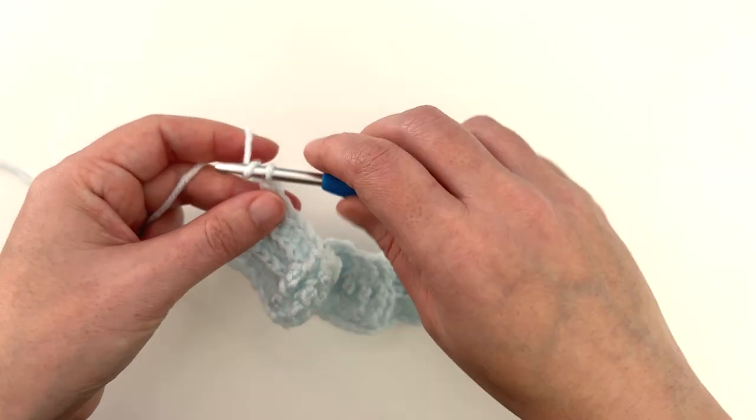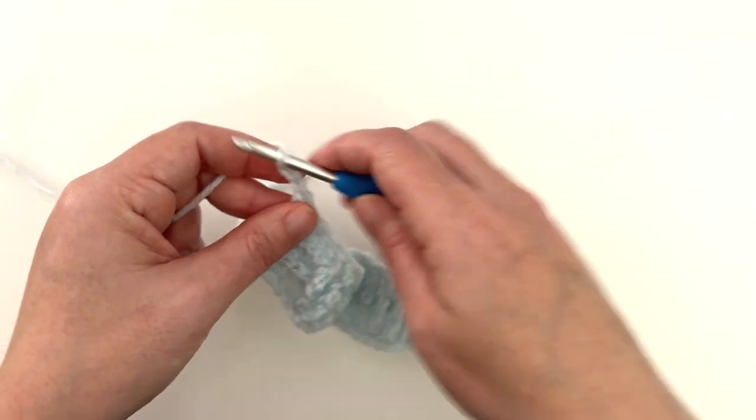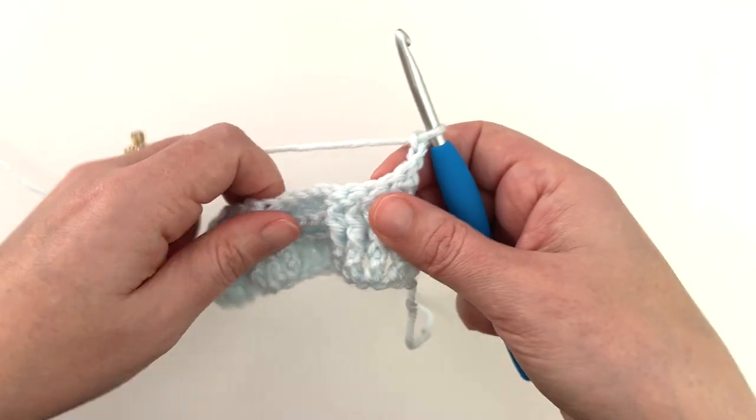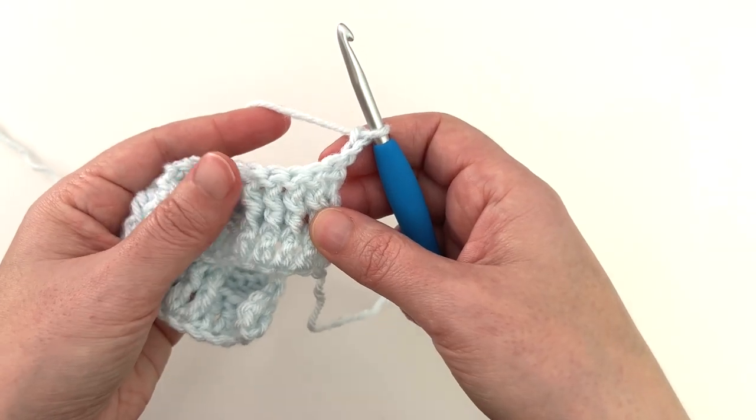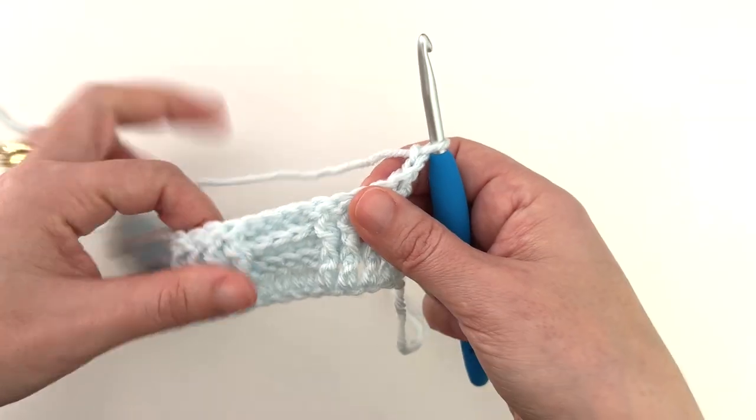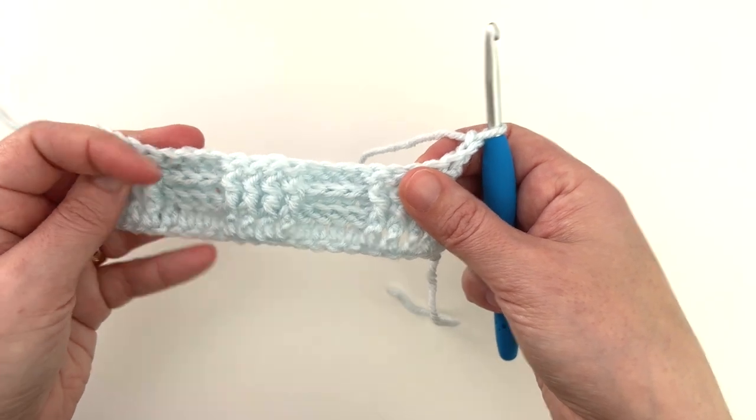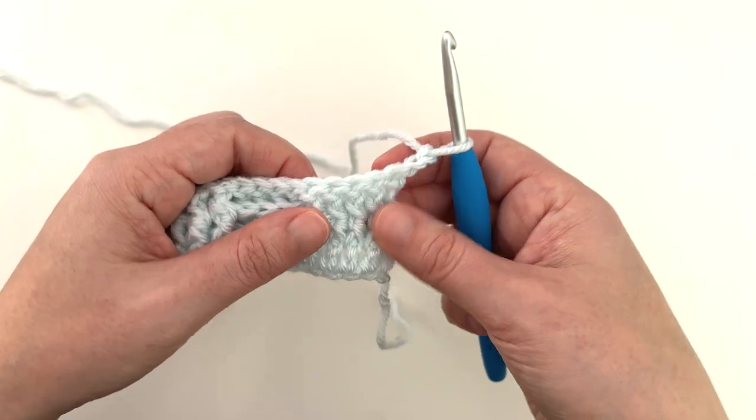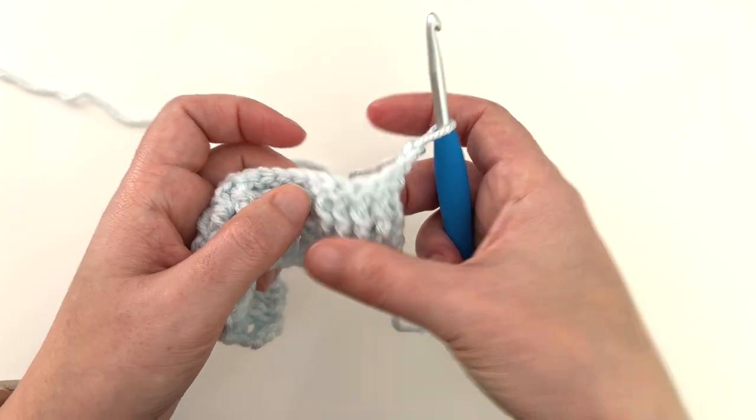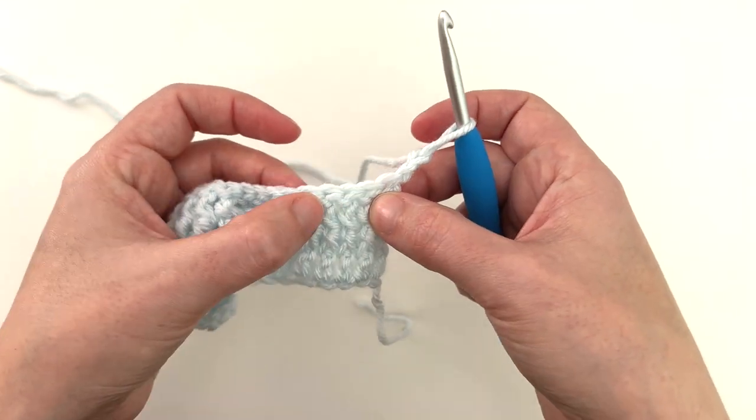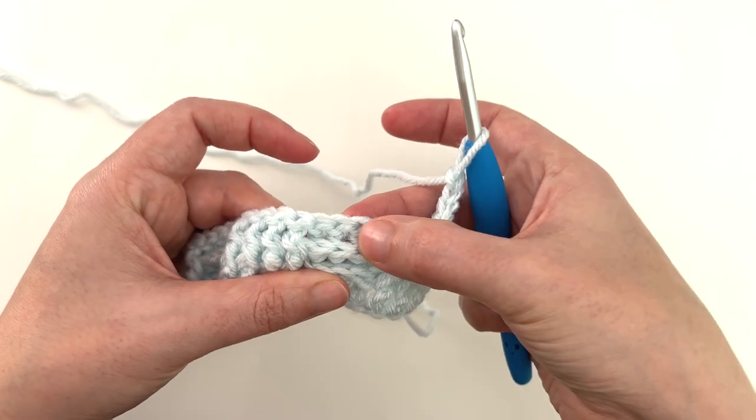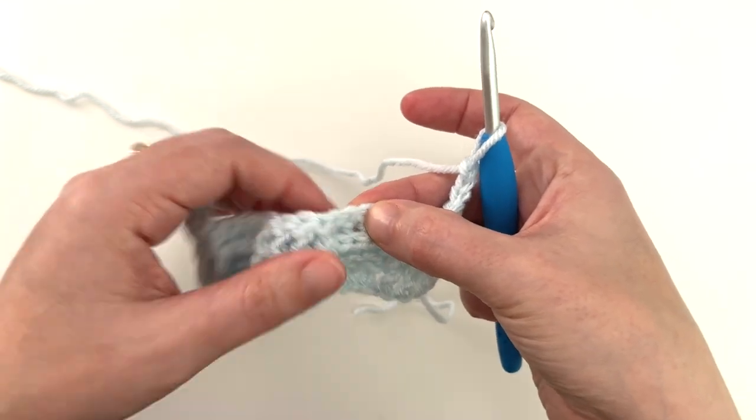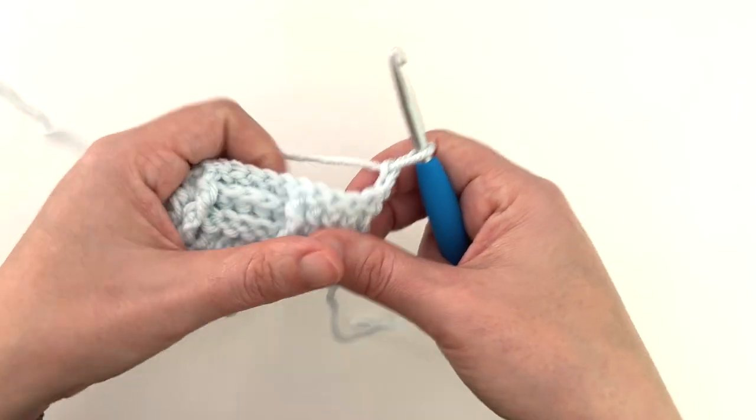For row four, chain two. Turn your work. And now we're going to begin doing opposite of what we're seeing. So, so far we have worked the stitches the way that they appear to us. But now these are all front posts. We're going to work four back posts. Four front posts, four back posts. That's what's going to give you that checkered look.